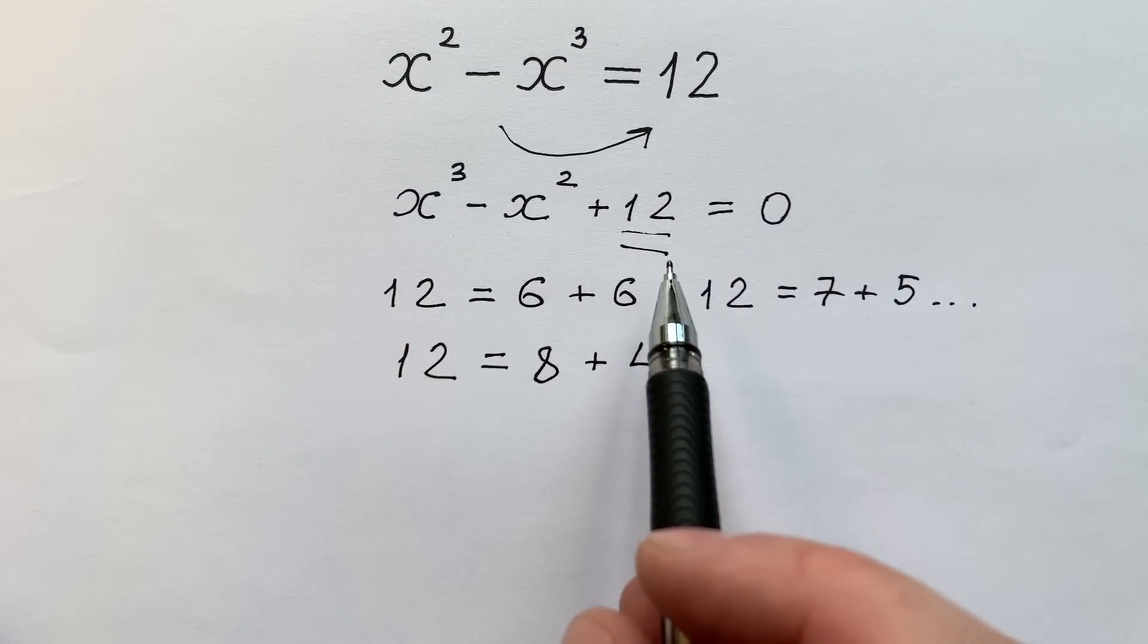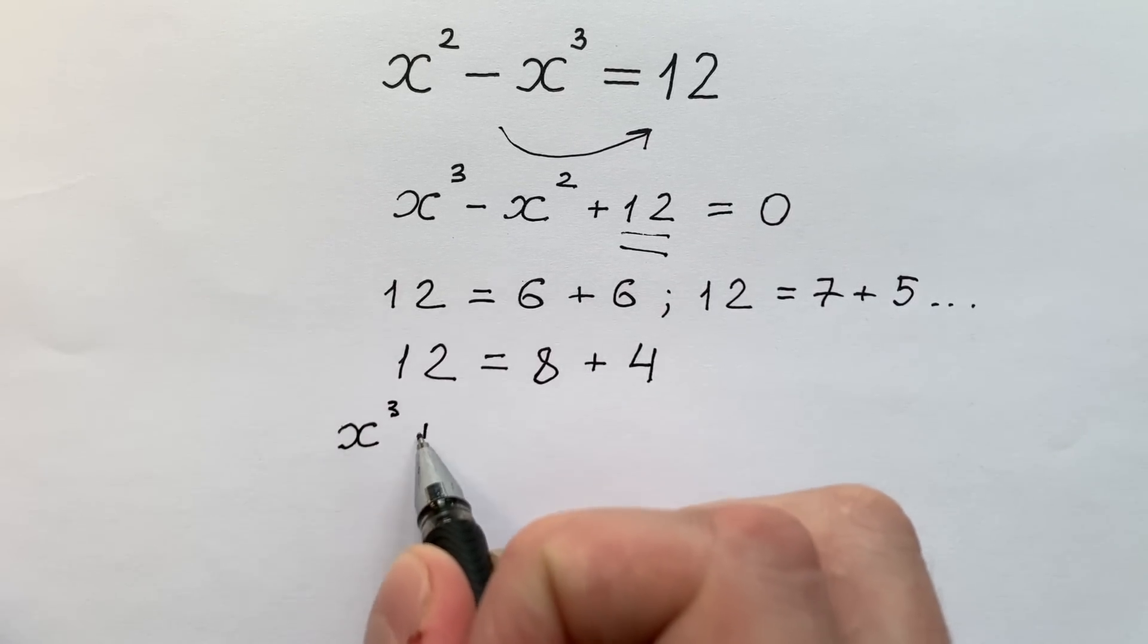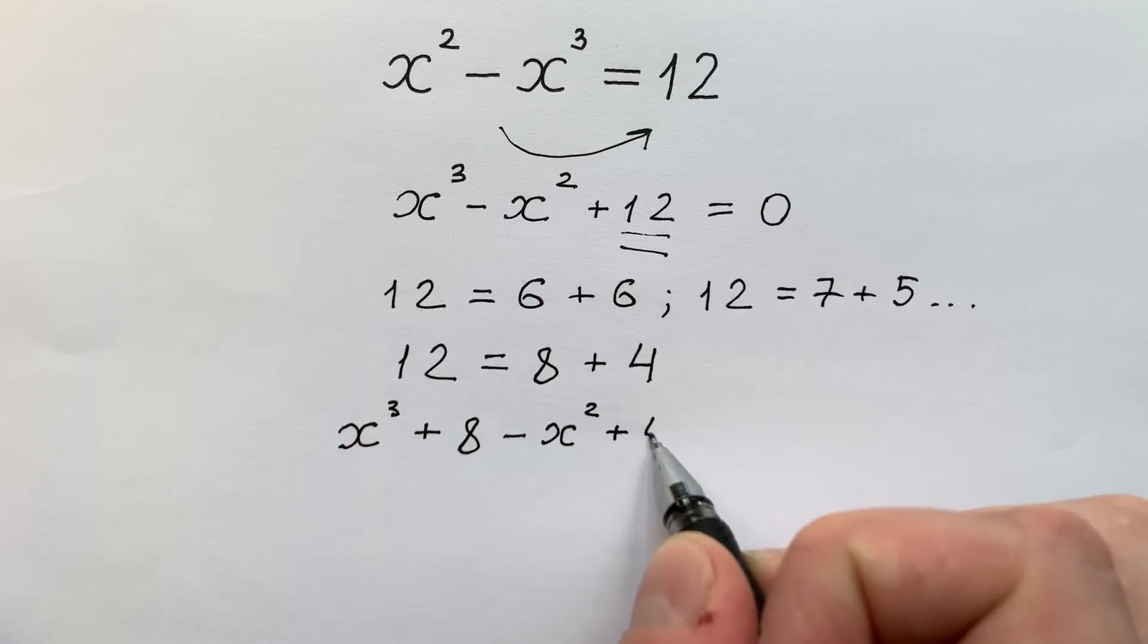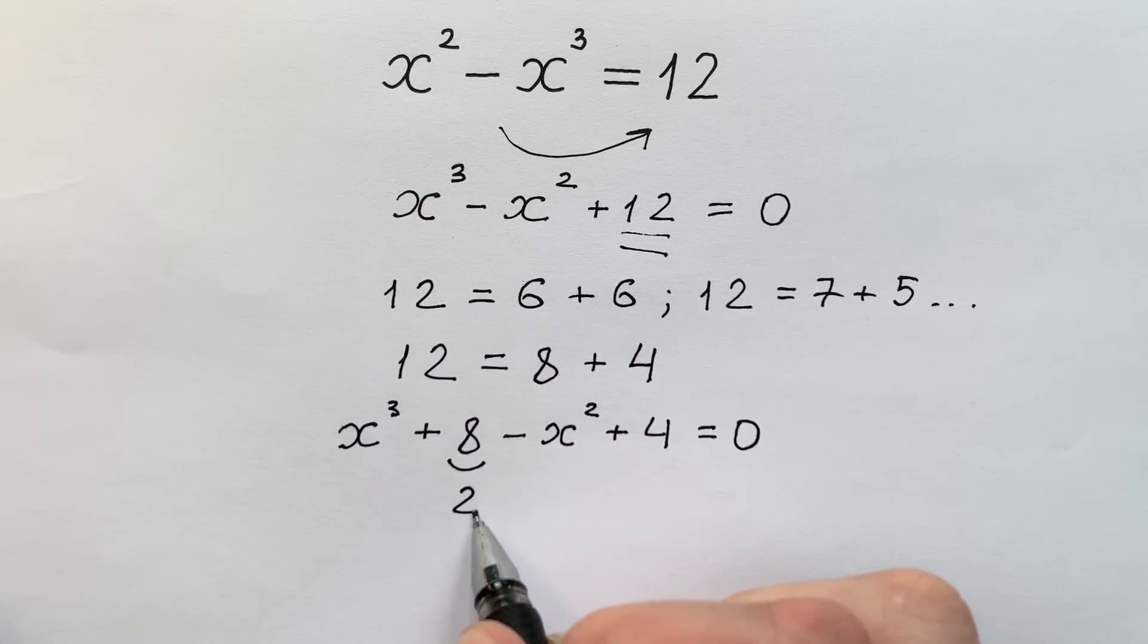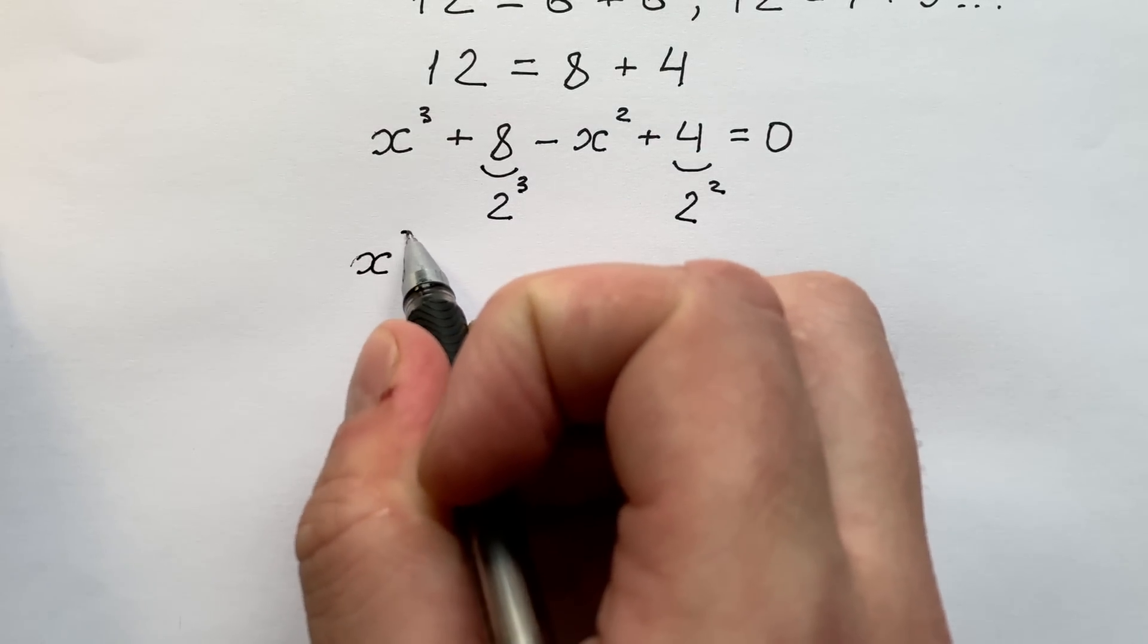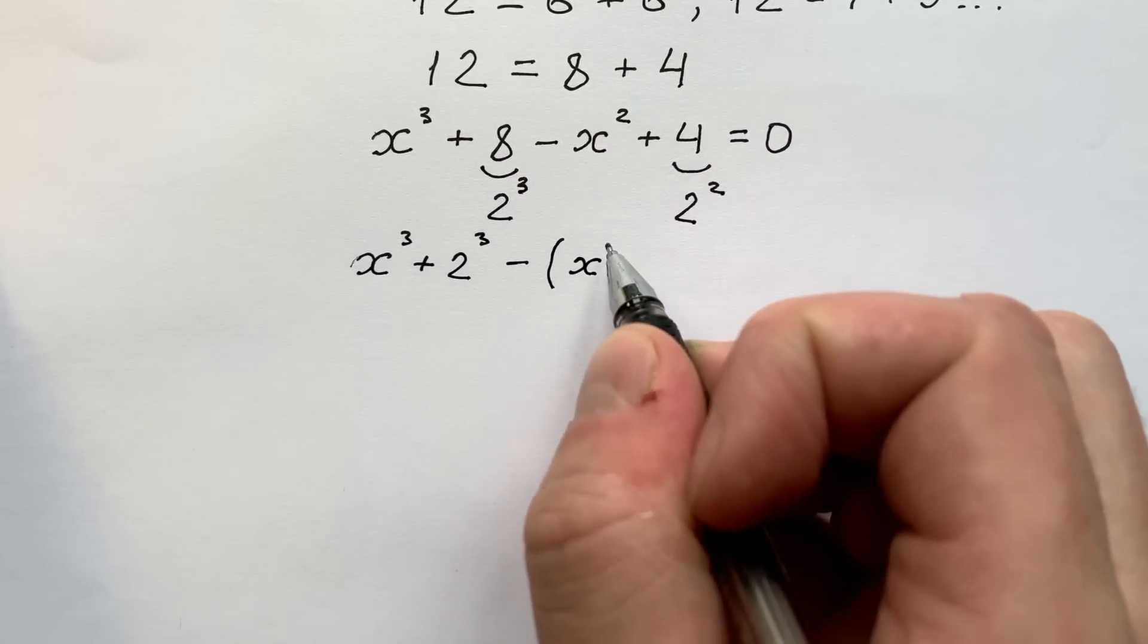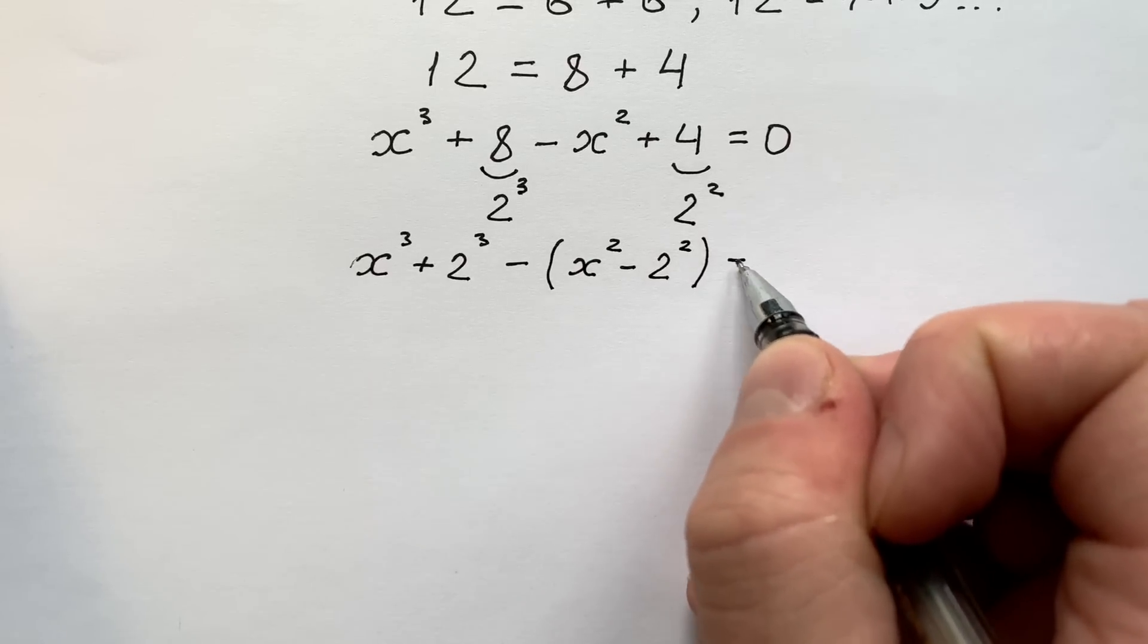In this way we can write the left side like x to the power of 3 plus 8 minus x squared plus 4, and it equals to zero. Number 8 we can write like 2 to the power of 3, while 4 we can write like 2 to the power of 2. Then we can present our equation like x to the power 3 plus 2 to the power of 3 minus x squared plus 2 to the power of 2, and it equals to zero.